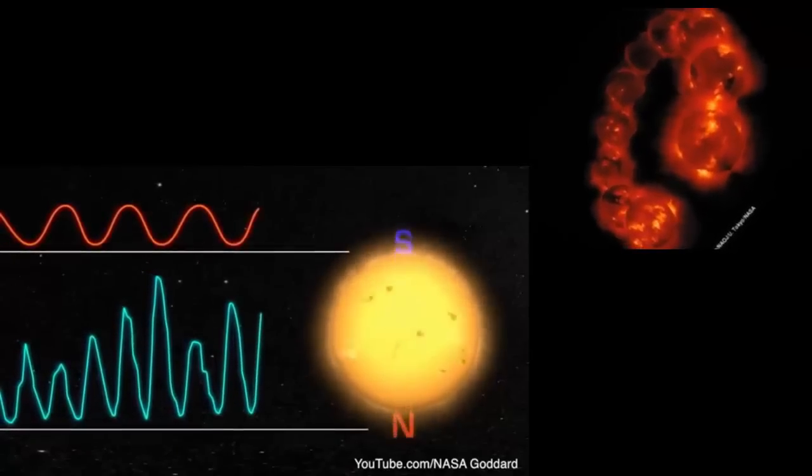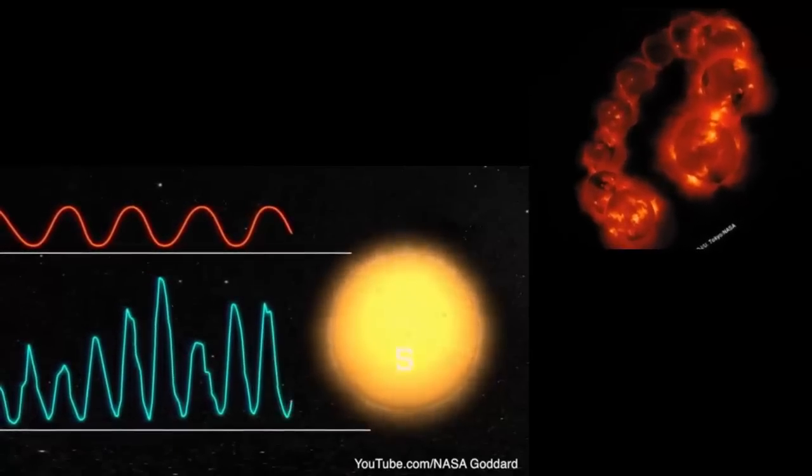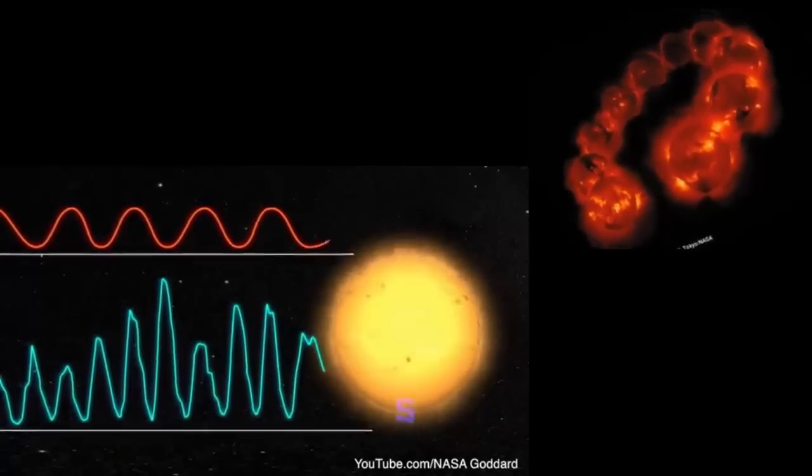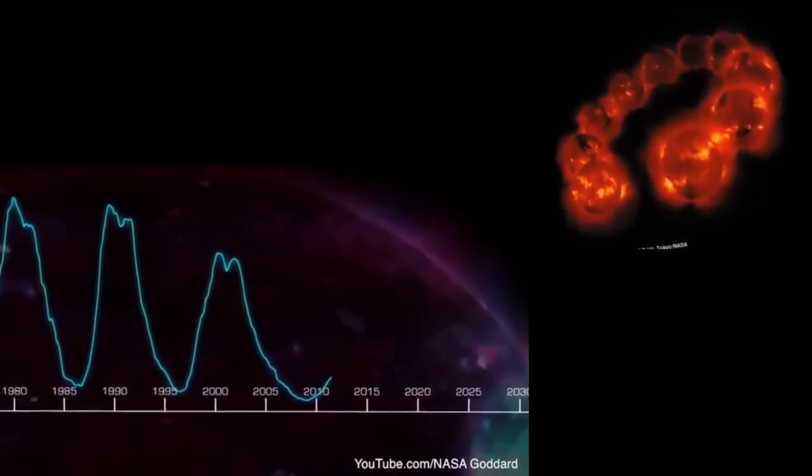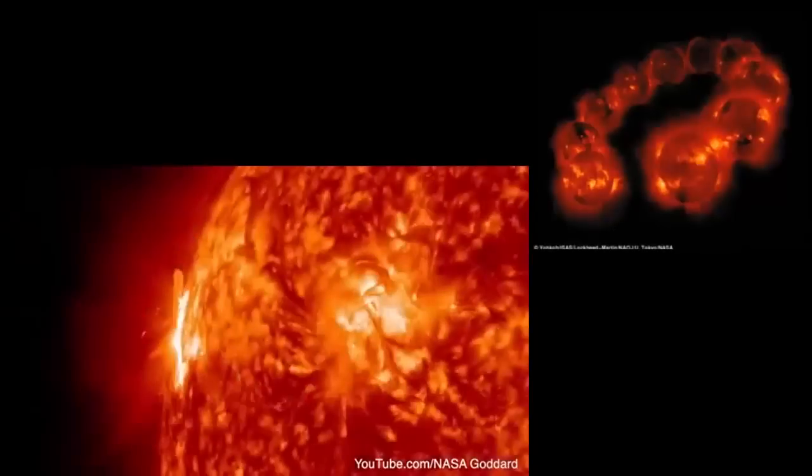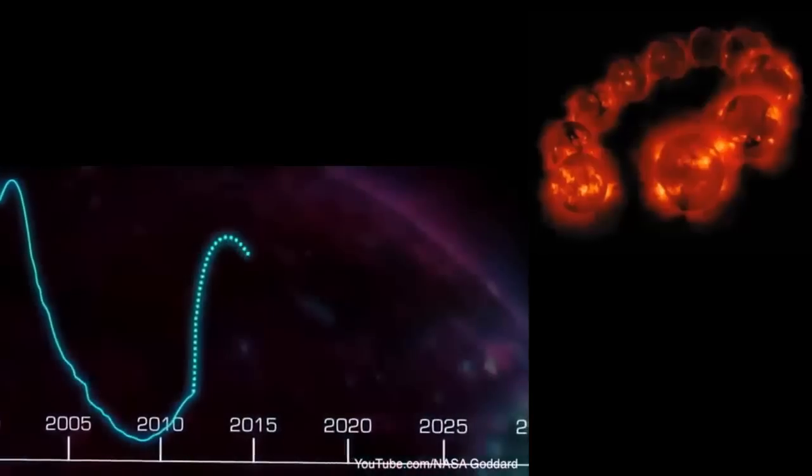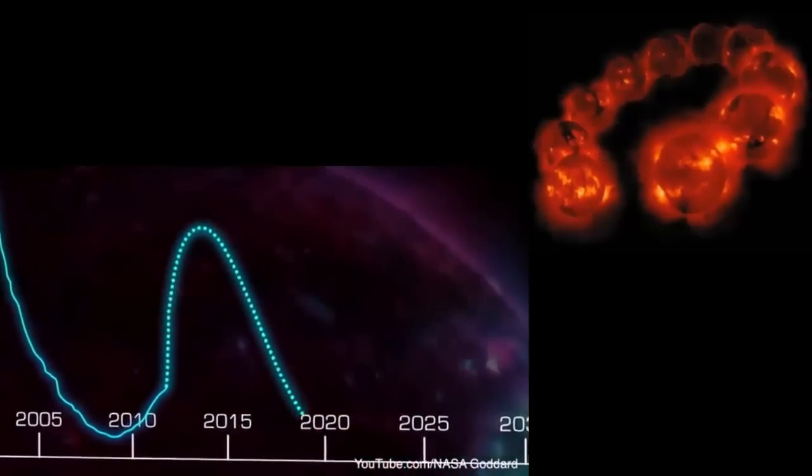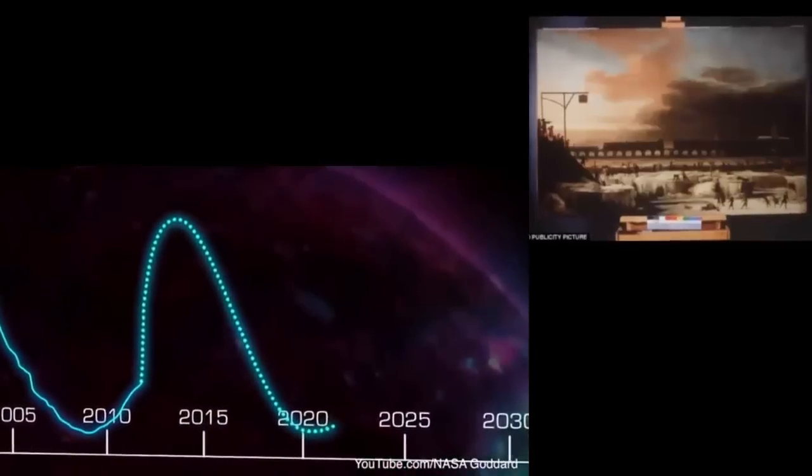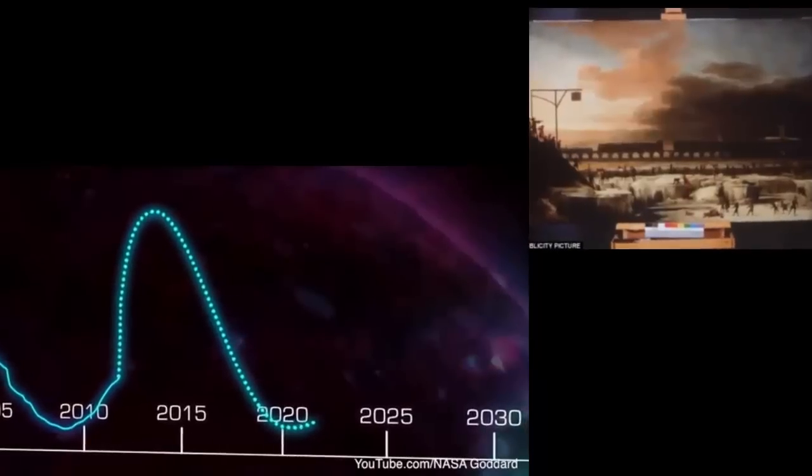Right now, the Sun is approaching solar maximum, so flares and CMEs are more common than they were a few years ago. This cycle may peak in 2013 or early 2014 and should reach its minimum around 2020, although predictions about the Sun are still uncertain.